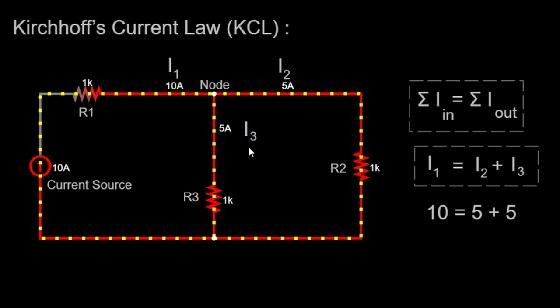Now, let's consider the node where R1, R2, and R3 are connected. According to Kirchhoff's Current Law, the sum of currents entering and exiting any node must be zero. In this case, the current I1 from the 10-ampere source splits into two currents, I2 and I3, flowing through R2 and R3, respectively.